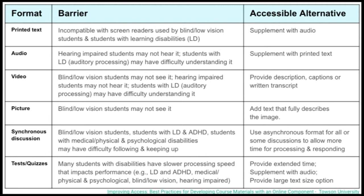In a synchronous discussion, blind or low-vision students or students with learning disabilities may have difficulty keeping up. Using asynchronous format for all or some discussions allows more time for processing and responding. For tests and quizzes, students with disabilities may have slower processing speeds — you might want to provide extended completion time, supplement text questions with audio, and offer different text size options. These are some of the formats, barriers, and alternatives to make course content accessible.